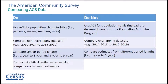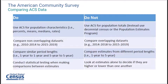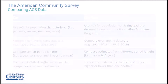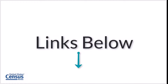It is also important to keep in mind that all ACS data are estimates. We collect data from a sample of the population in the United States and Puerto Rico rather than from the whole population. To interpret the reliability of the estimates, the Census Bureau publishes a margin of error for every ACS estimate. Unless you take into account the margins of error, you cannot conclude that the estimates are statistically different from one another. Instead, you have to conduct statistical testing when making comparisons between estimates to check for any differences. Looking at estimates alone to decide if they are higher or lower than one another is not sufficient. We will talk more about how to do that in the next module.